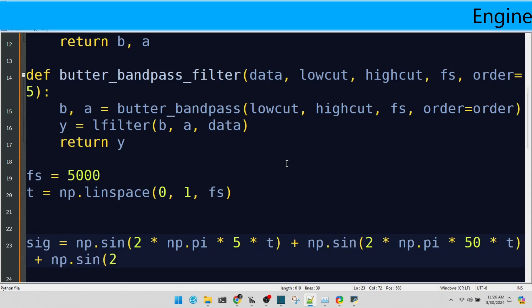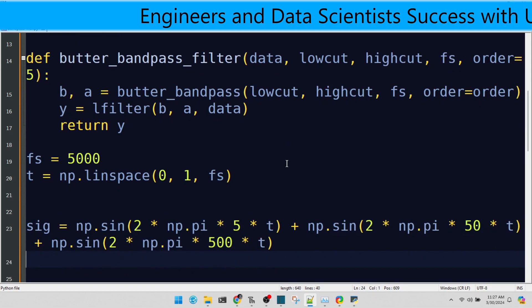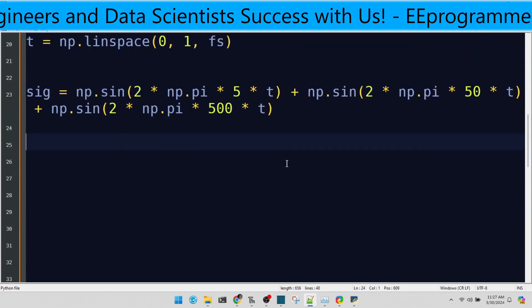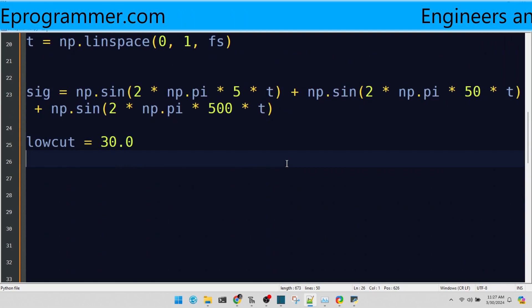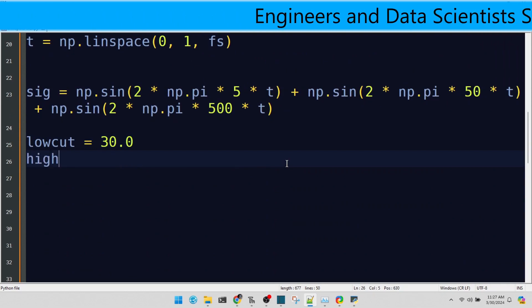We'll set our filter to pass frequencies between 30 Hz and 300 Hz. This means our filter will suppress noise outside this range, focusing on the sweet spot frequencies.